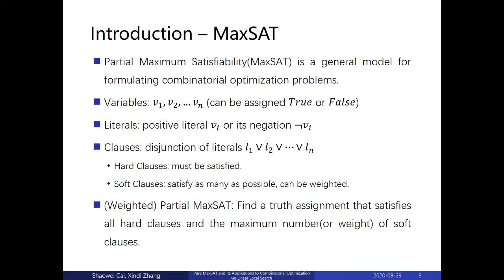Let's start with the MaxSAT problem. MaxSAT is a general model for formulating combinatorial optimization problems. Basically speaking, we have some boolean variables x1, x2, to xn, which can be assigned true or false. Then a literal can be a variable or its negation. We express constraints with clauses. A clause is a disjunction of literals. And in the general form of MaxSAT, which is called partial MaxSAT, we have hard clauses and soft clauses. The goal of the problem is to find an assignment that satisfies all hard clauses and to satisfy as many as possible soft clauses. And we can have the weighted version.